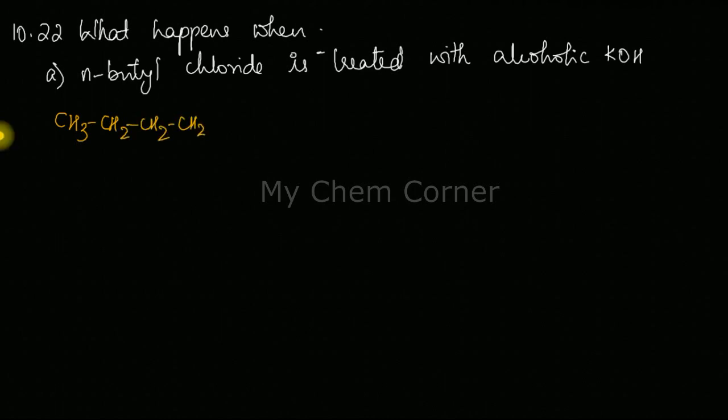I have a butyl chain and n-butyl chloride is just the last carbon containing chloride, so here I have n-butyl chloride. Now this one is treated with alcoholic potash. In one of the videos I have clearly told you the difference between